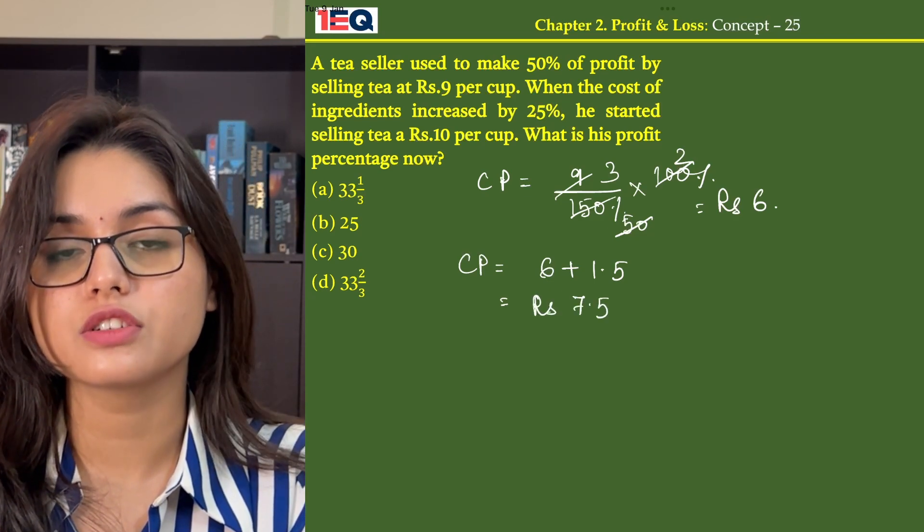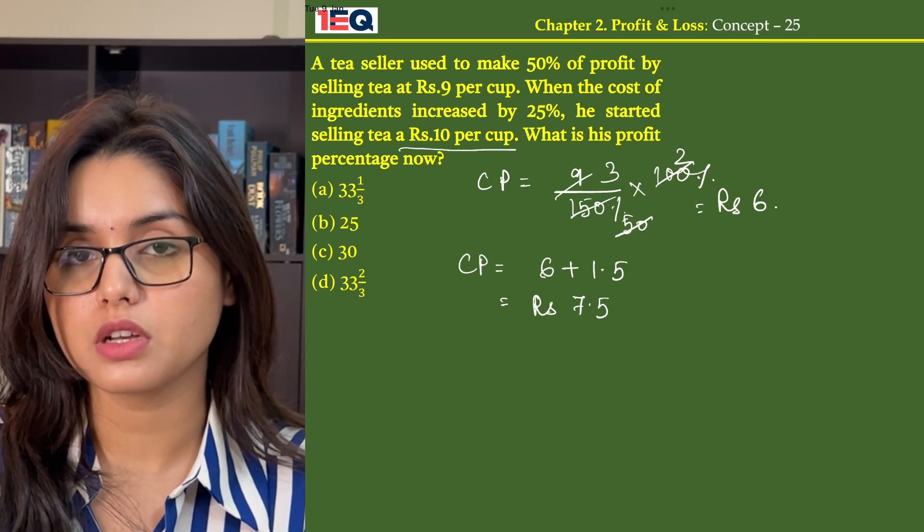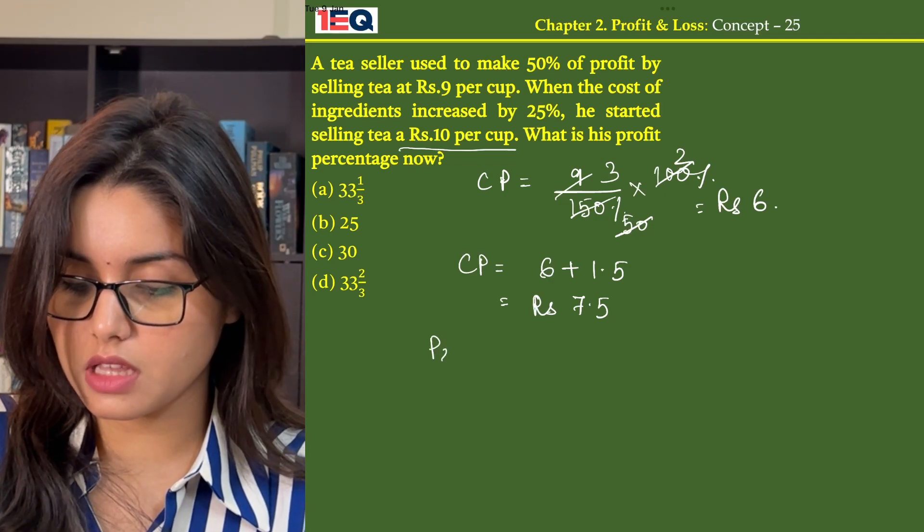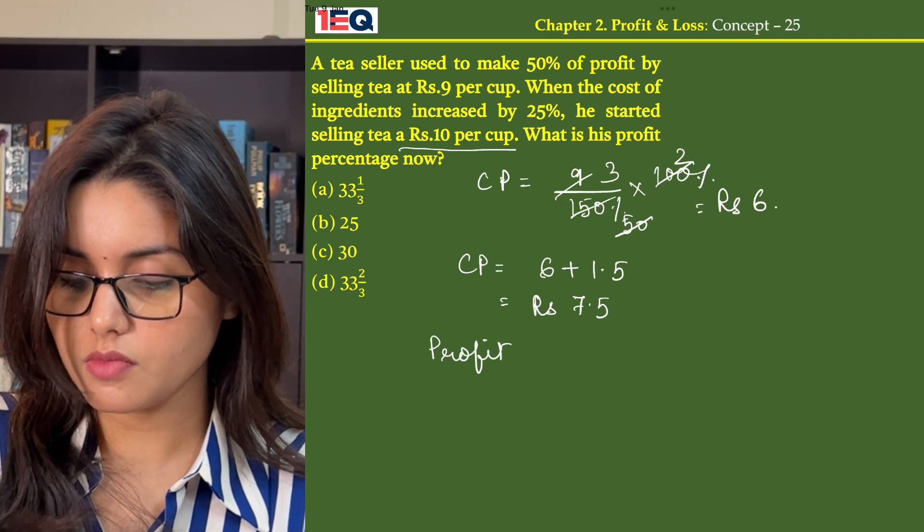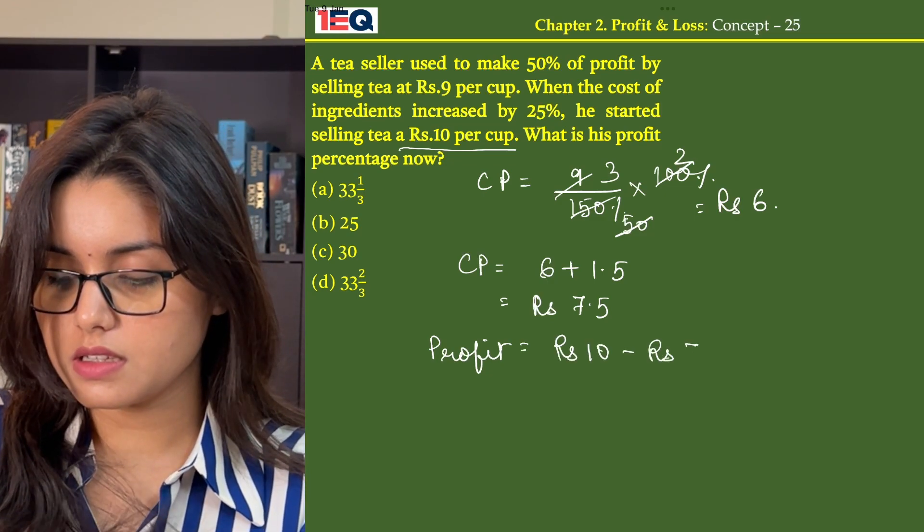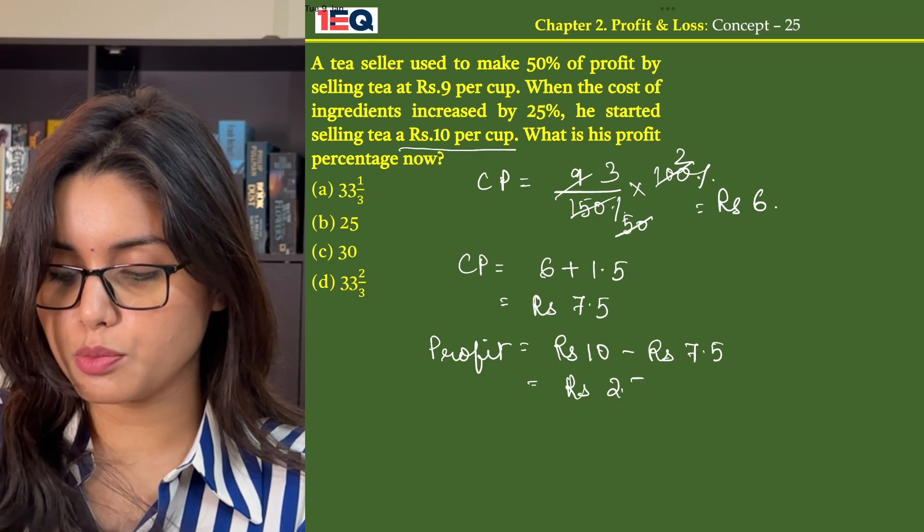When the cost of ingredients increased, he started selling tea at Rs. 10 per cup. His selling price now is 10. Profit then becomes Rs. 10 minus Rs. 7.5, that is Rs. 2.5.